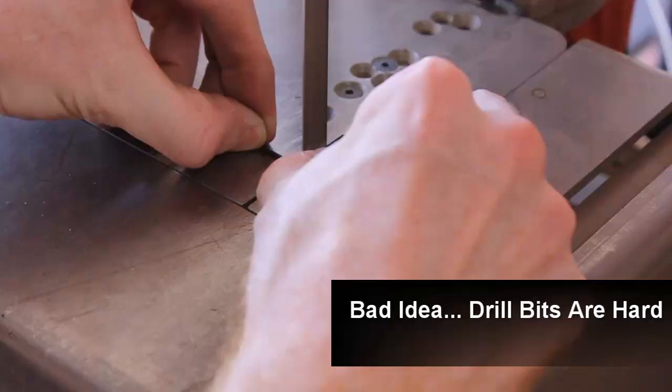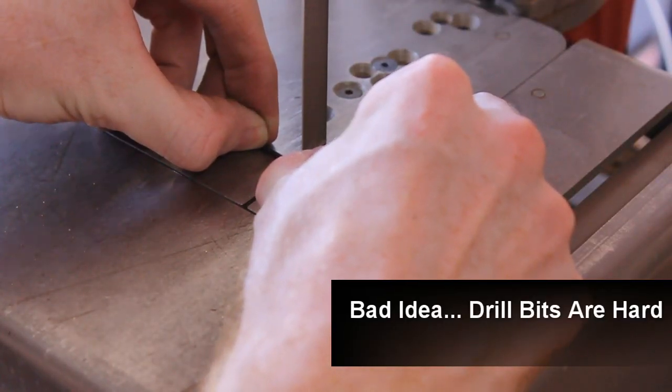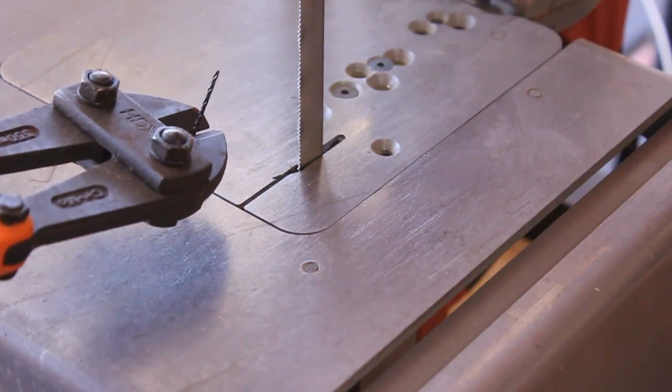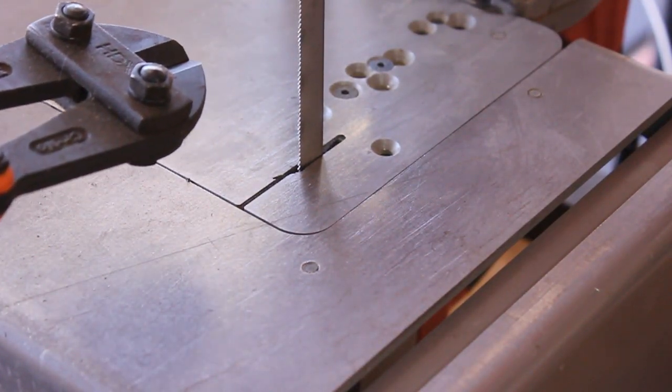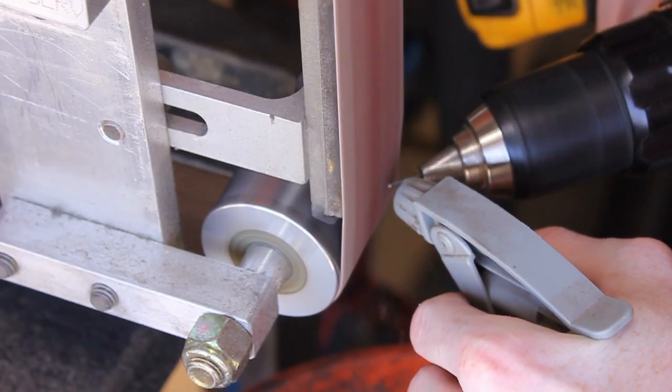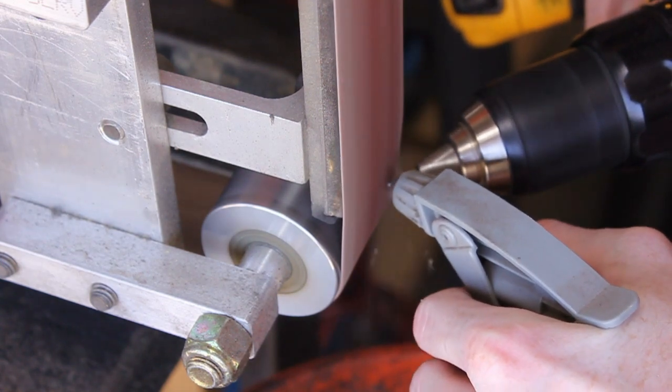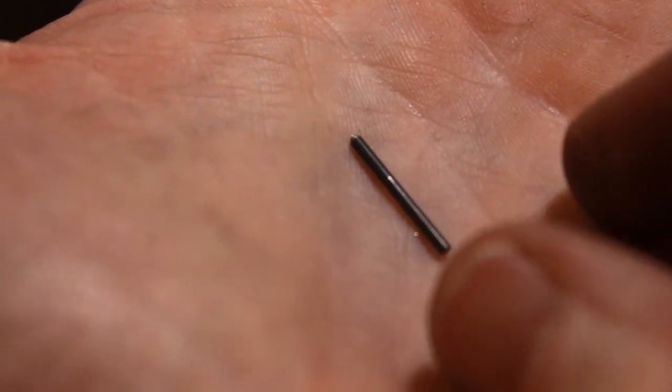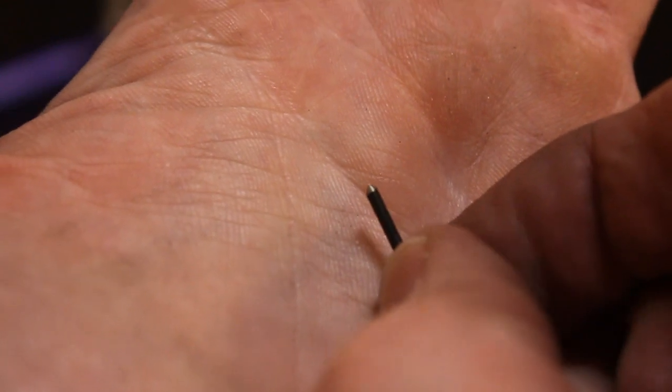We're going to be using a sixteenth of an inch drill bit as our scribe. It does not cut well, FYI these are very hard, so I used a set of bolt cutters and then I sharpened it to a point on my belt sander, being very careful not to overheat it and ruin its temper.